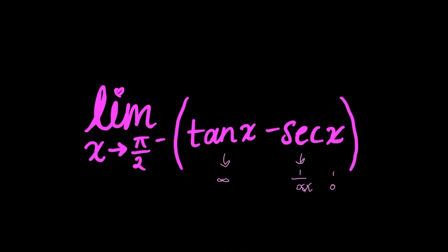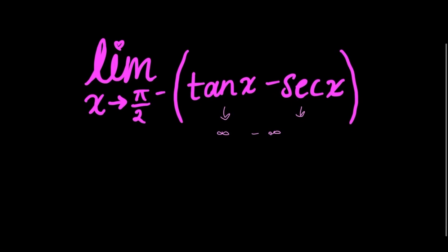So the form of my current limit is infinity minus infinity, which is an indeterminate form. We want to get rid of it using L'Hopital's rule. However, there's an extra step we need to take first, which is to condense this into a fraction.